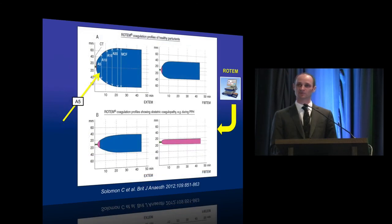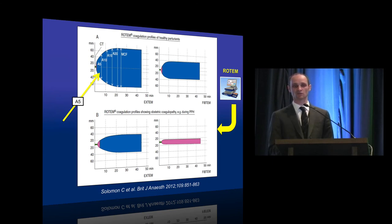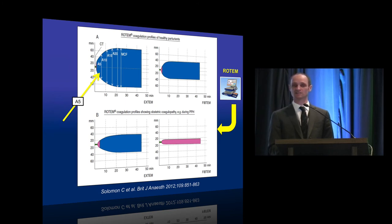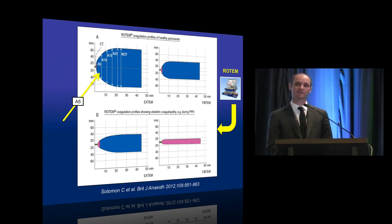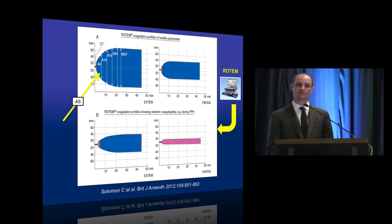Using ROTEM, we see something very similar — traces from patients with obstetric coagulopathy look skinnier than those from normal patients, indicating problems with clot strength and prolonged clot initiation. An important feature of ROTEM is that you can get early information about clot strength by measuring the amplitude at five minutes — the A5 value — which provides information about fibrinogen-influenced clot strength much sooner than sending a fibrinogen test to the lab, which takes at least 20 to 30 minutes.